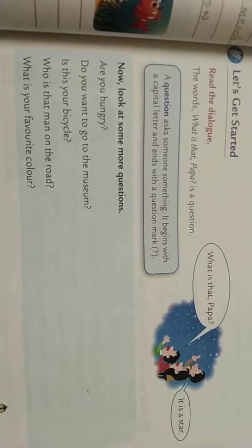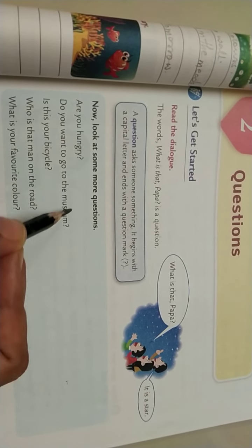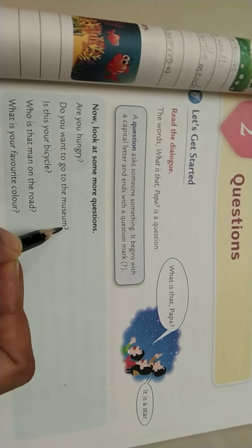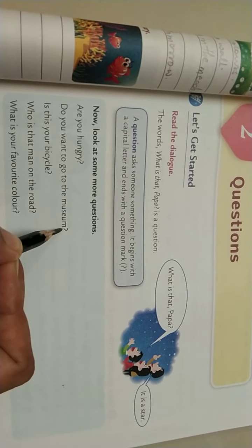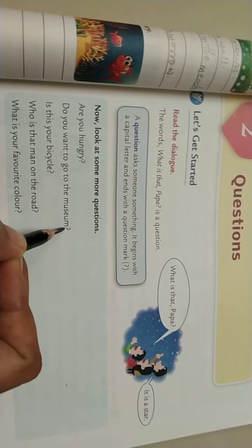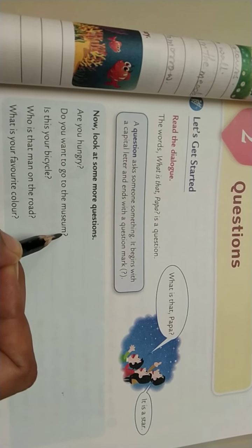Here we see there are some examples given. Are you hungry? So you will either say yes or you will say no. The next one: Do you want to go to the museum? Your answer will be yes or no.